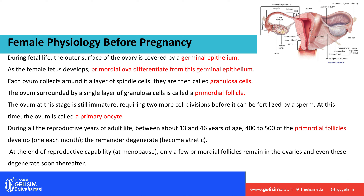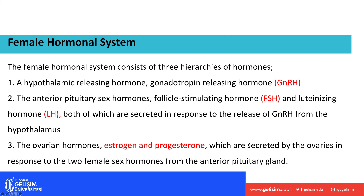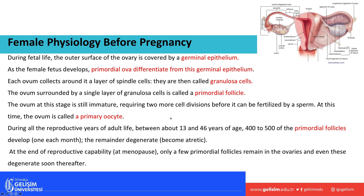During the reproductive years, puberty can start as early as age 8 or 9 and continue until the late 40s or into the 50s. A female has between 400 and 500 primordial follicles during her lifetime, with one developing each month and the remainder degenerating. At the end of reproductive capability, this period is called menopause.